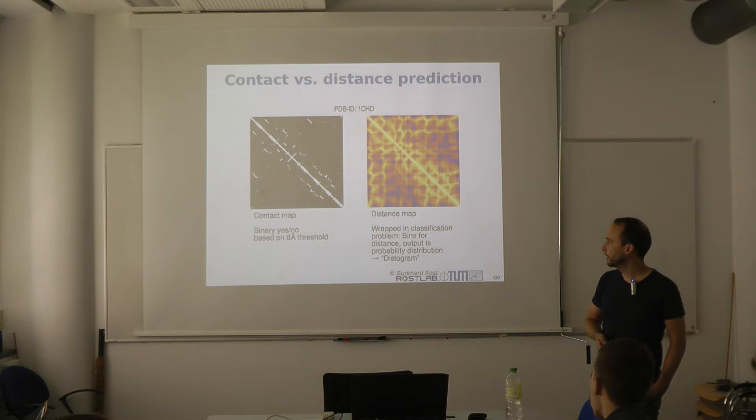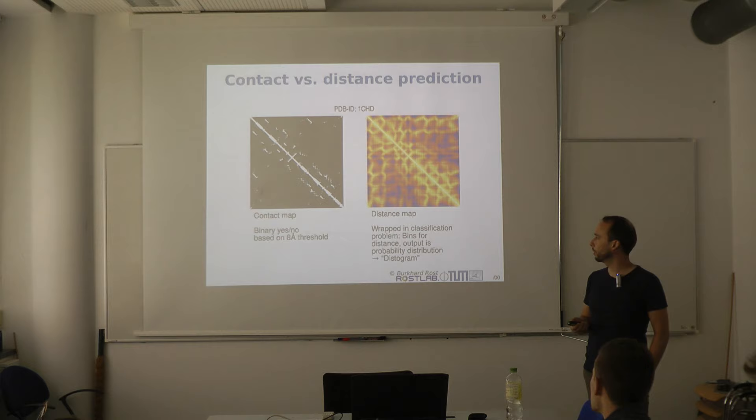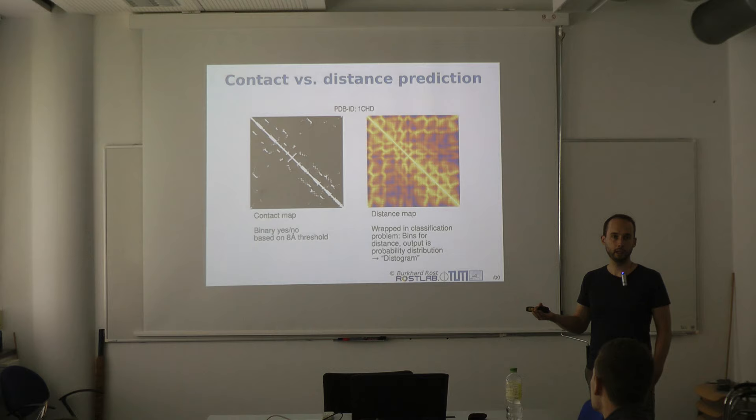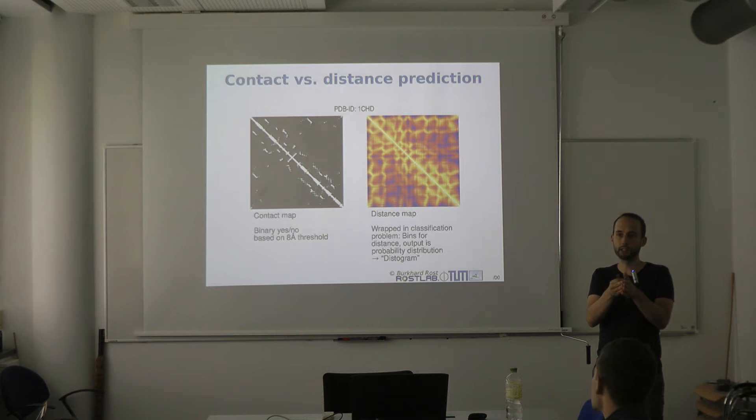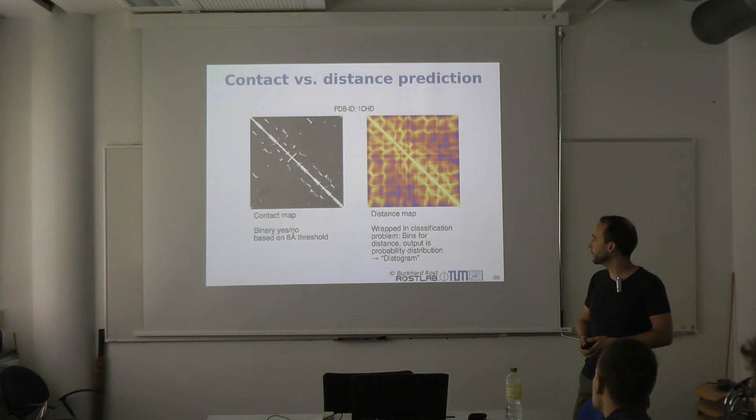For historical reasons, especially in the CASP challenge, we're still using contacts. You can reduce a distance map to a contact map quite easily: take all bins representing distances below 8 angstroms and sum up all the probabilities — that gives you the probability that two residues form a contact. This is important because otherwise you wouldn't be able to compare to earlier methods.